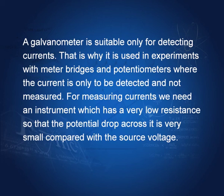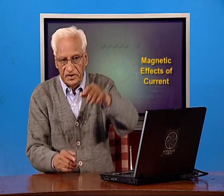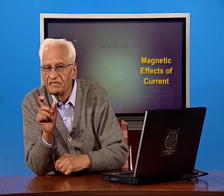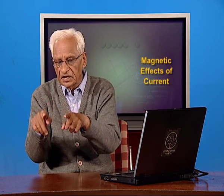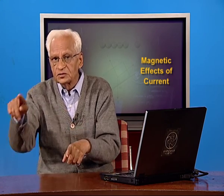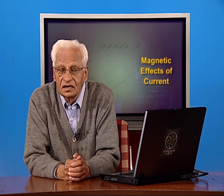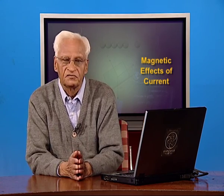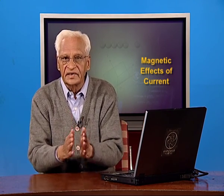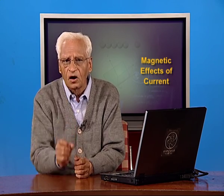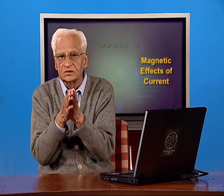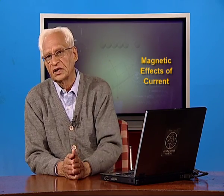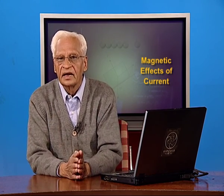If we want to measure current, we need an instrument with very low resistance so that the potential drop across it is very small compared with the source voltage. If the galvanometer has significant resistance, there will be a potential difference across it affecting the current through the circuit, but we want to measure that current without disturbing it. That is a general principle of physics — we cannot disturb the quantity to be measured.